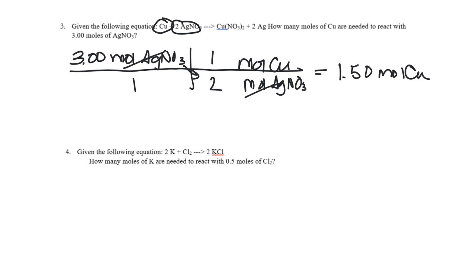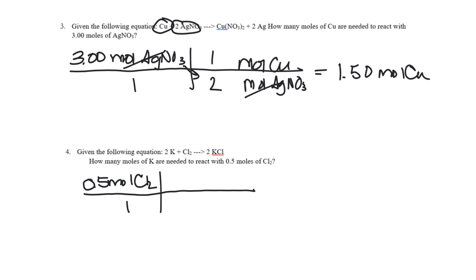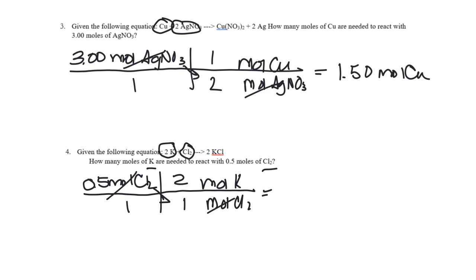Question four: how many moles of potassium are needed to react with half a mole of chlorine? Start with 0.5 moles of chlorine — number, unit, and substance. Moles of chlorine comes down; moles of potassium goes to the top because I'm starting at chlorine and want to get to potassium. Look at the equation: there's a two next to potassium and a one next to chlorine. Cancel units, multiply 0.5 times two — I need one mole of potassium.